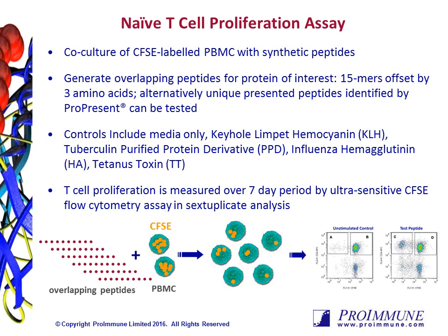CFSE is an intracellular staining dye that is equally distributed into daughter cells each time the cell divides. The CFSE-labeled PBMCs are co-cultured with peptides over a seven-day period. The test peptides used in this assay can be a set of individual sequences determined as potential epitopes through other assays, such as our mass spectrometry-based antigen presentation assay, or alternatively we can generate an overlapping peptide library from a region of your protein of interest. As a standard approach, we would generate greater than 95% pure 15-mers offset by three amino acids.